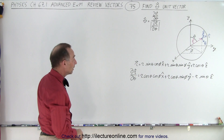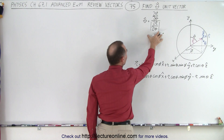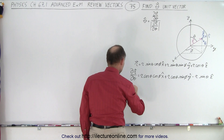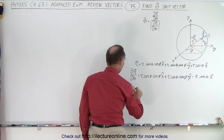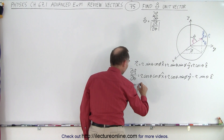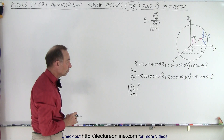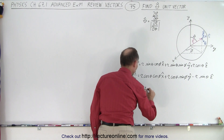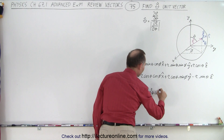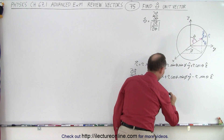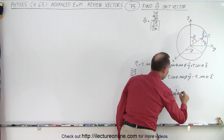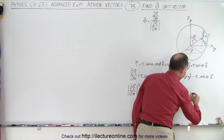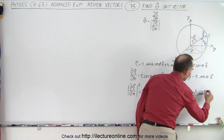Now we have the partial derivative, and we need to divide by its magnitude. We take the magnitude squared, which is the sum of the squares of the components. That gives us r² times cosine²(θ) times cosine²(φ), plus r² times cosine²(θ) times sine²(φ), plus r² times sine²(θ) — since squaring makes the negative positive.